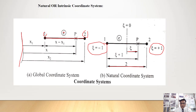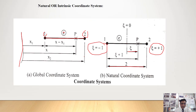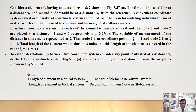In the natural coordinate system, the center of the element is considered 0, and node 1 and node 2 are placed at zeta = -1 and zeta = +1 respectively. The total length of the element is 2 units and this length is covered in the range of zeta from -1 to +1. To establish the relationship between the two coordinate systems, consider point P at distance x in the global coordinate system and at distance zeta from the origin, as shown in the figure.